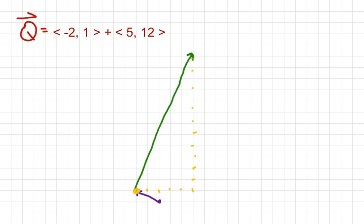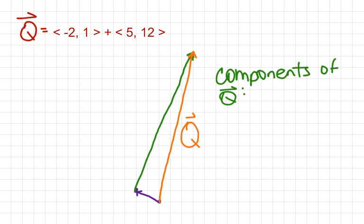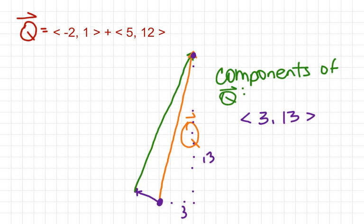To get our resultant vector, connect from our beginning point to our ending point. That is vector q — the sum of the other two vectors. If I ask for the components of vector q, looking at the orange resultant we count: over 3, and then up 13. So vector q is (3, 13), which tells us the direction and how far it goes.